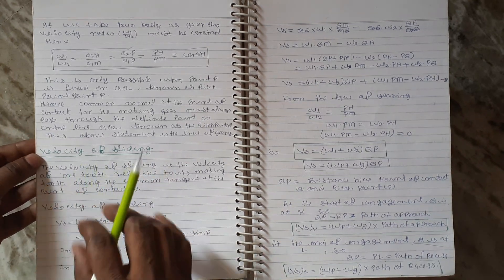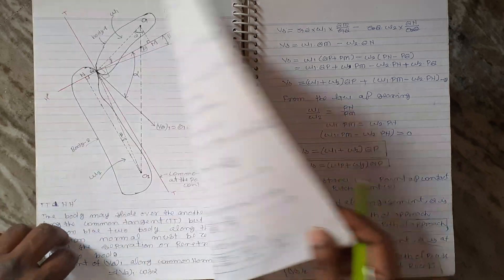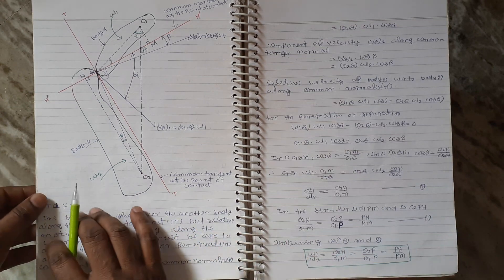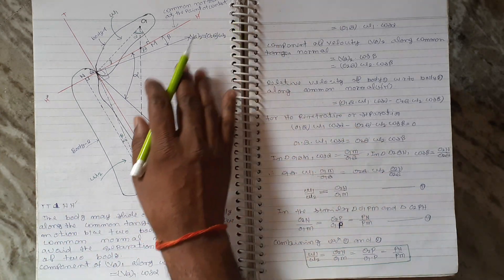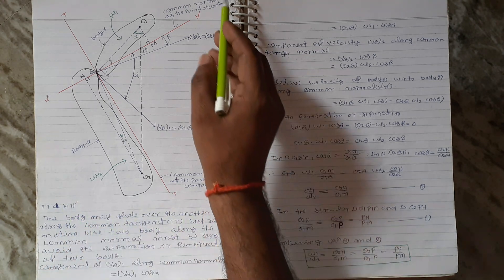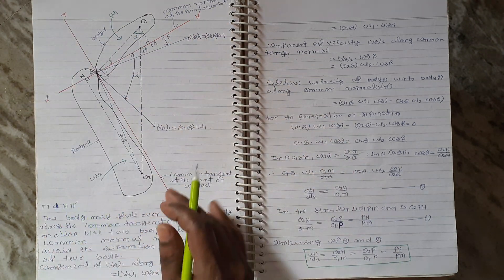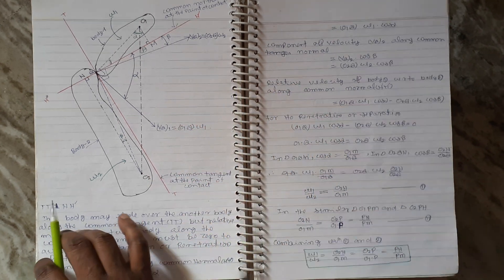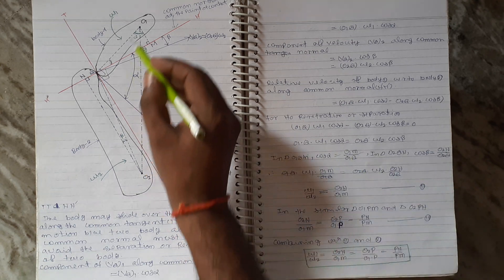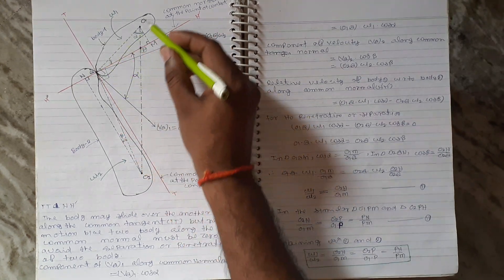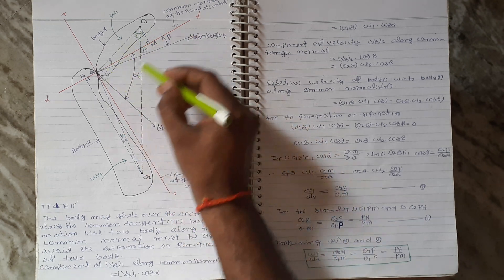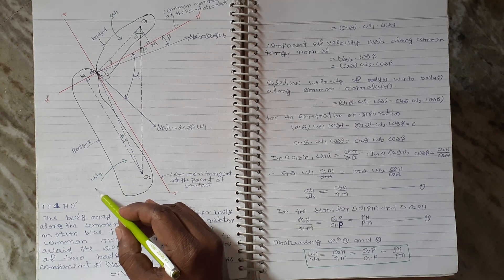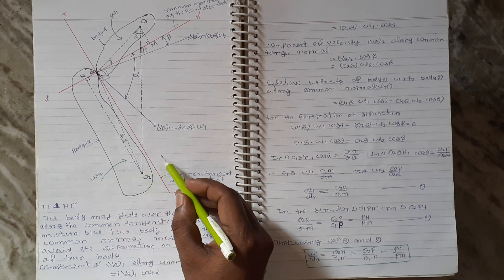To derive the velocity of sliding, I am referring to the same figure from the previous lecture. I am taking two bodies: body one and body two. Body one is rotating about center O1 with angular velocity omega 1, and body two is rotating about center O2 with angular velocity omega 2.